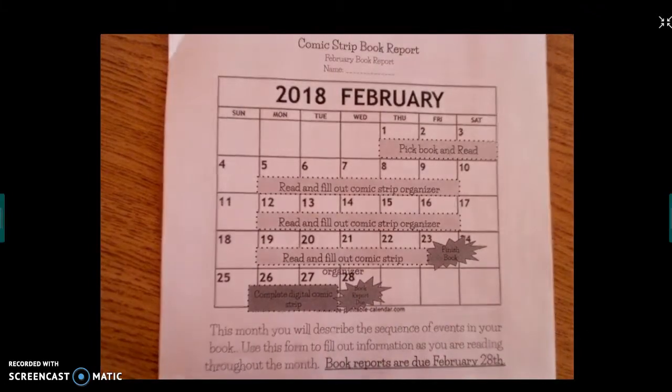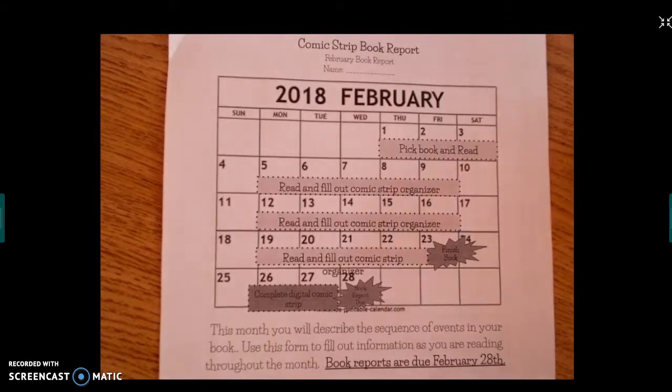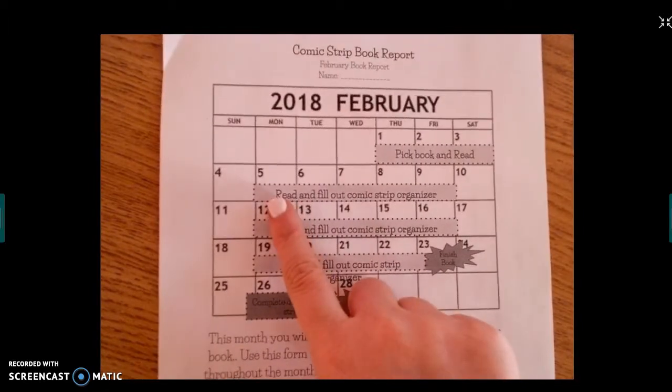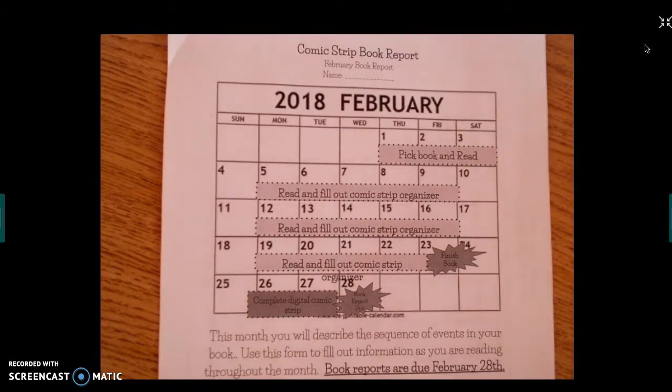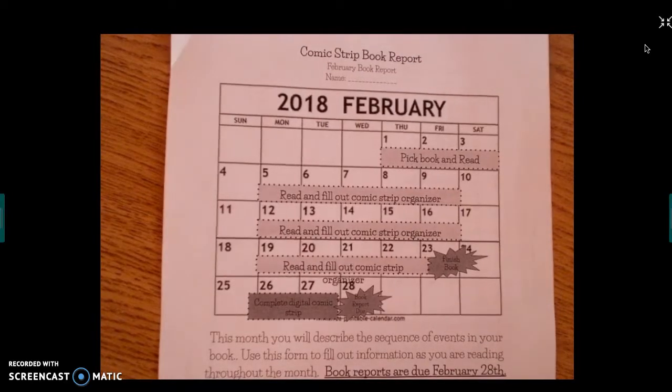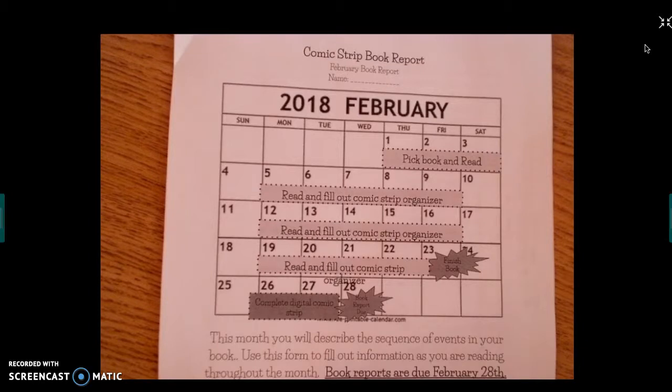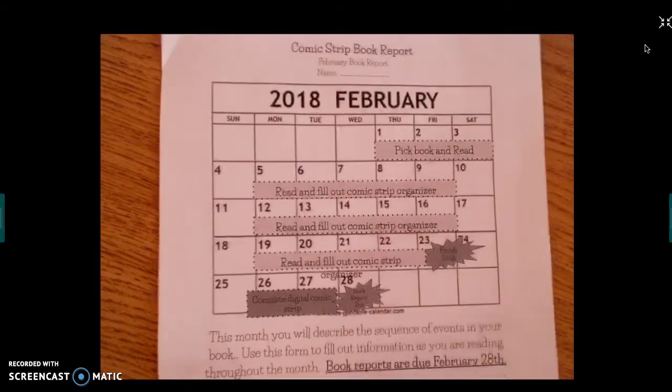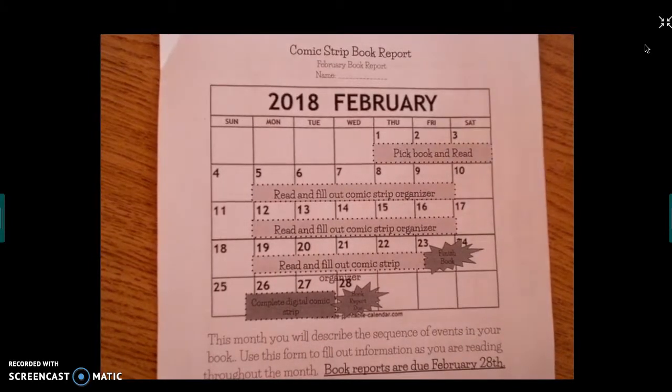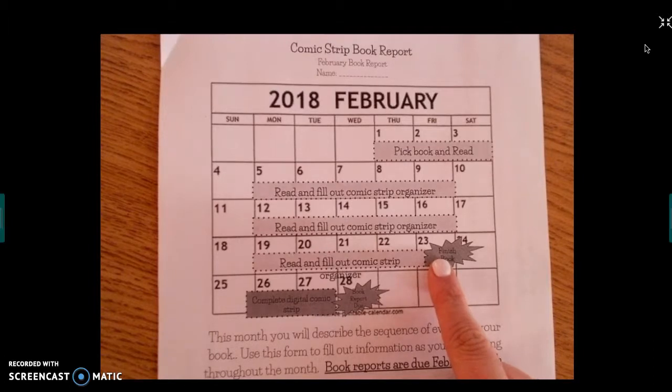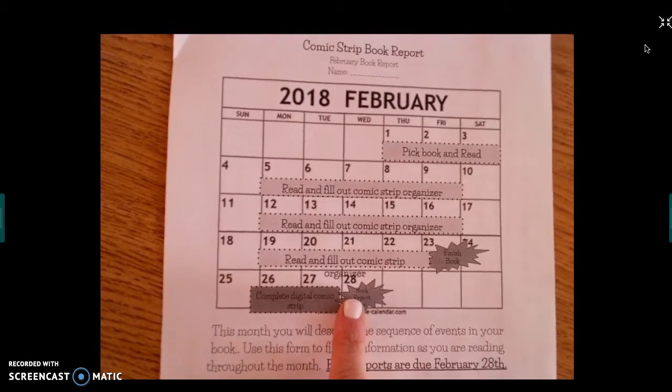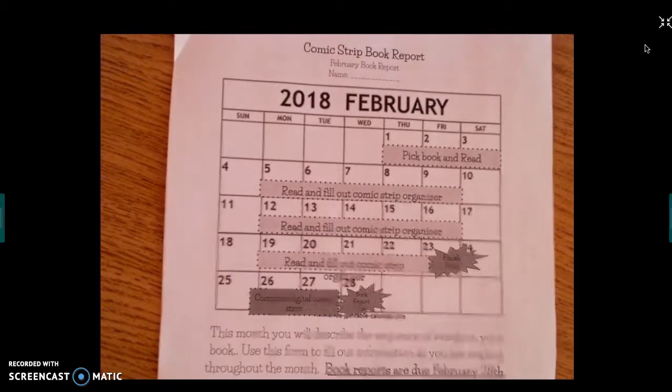The first thing that you're going to do is look at the calendar. We're already past here so you're somewhere in this week. This is going to be one of those months where you read and work on filling out your organizer at the same time. You won't want to wait until the very end to fill out your organizer. You will have until the 23rd to finish your book and finish your organizer, and then you'll have three days at the end of the month to finish your comic strip.